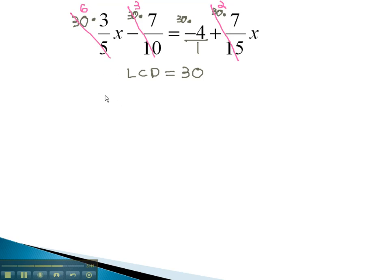So now, all that remains is 6 times 3x, or 18x, minus 3 times 7, which is 21, equals 30 times negative 4, which is negative 120, plus 2 times 7x, which is 14x.